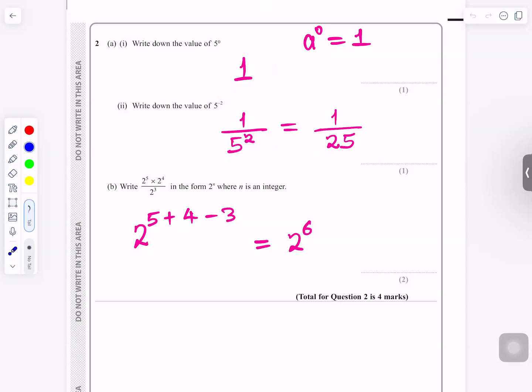Part B: 2 to the 5 times 2 to the power 4. You add the 5 plus 4. It gives you 9. 9 take away 3 gives you 6. So it's 2 to the power 6.